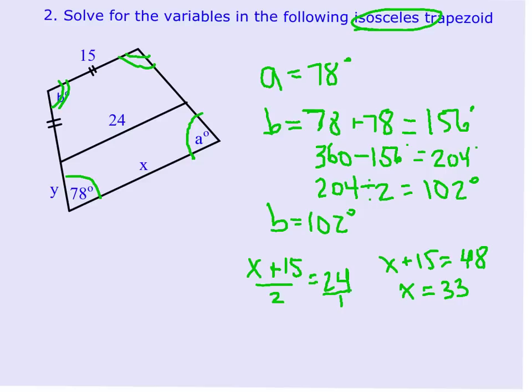And then to find Y, this mark right here says that it's congruent to this, and so that means this is 15. And because the median is at the midpoint of the leg, then Y would also have to be 15.